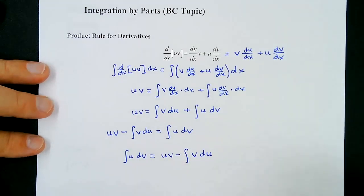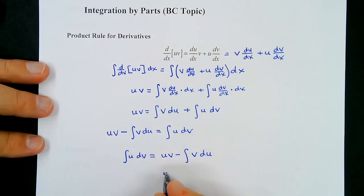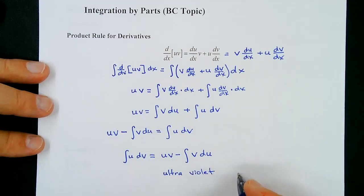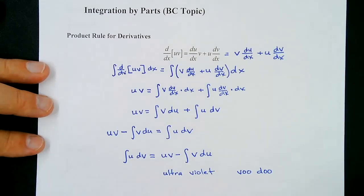One easy way to remember this: uv stands for 'ultraviolet,' and v du we call 'voodoo.' So we say 'ultraviolet voodoo.' We use ultraviolet voodoo when we have a product and it didn't come from the chain rule.